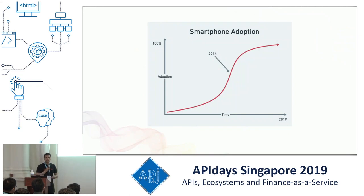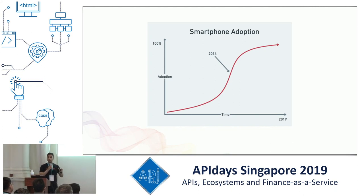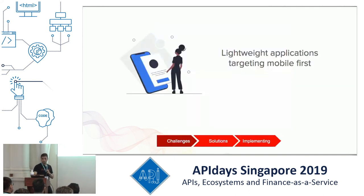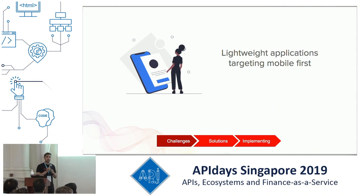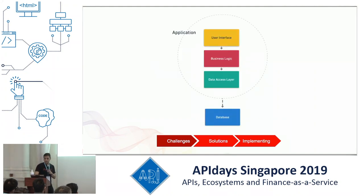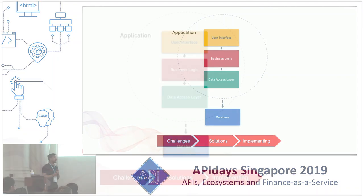Let's understand how this all started. From 2014 onwards, when the iPhone 6 and iPhone 5C came out, we saw mass adoption of smartphones. This led us to rethink the way we build applications. We want to start aiming for mobile-first, meaning a lightweight application that can scale to Android, iOS, and websites.